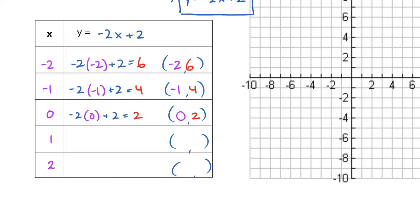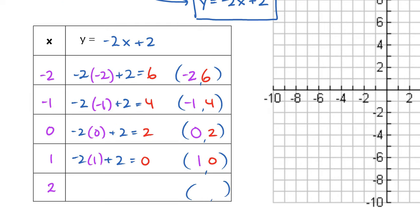And the last couple ones, if you want to pause the video and try these on your own, you're more than welcome to. I'm just going to finish this off. So we are going to plug in 1 now. So we have negative 2 times 1, and then plus 2. That'll give me 0. So I have the coordinate 1, 0.